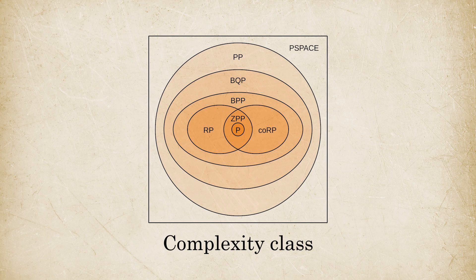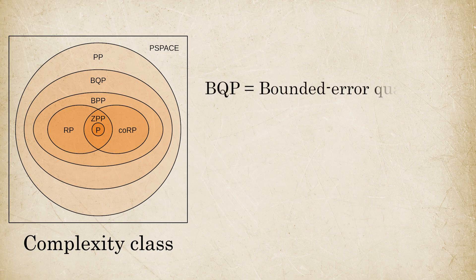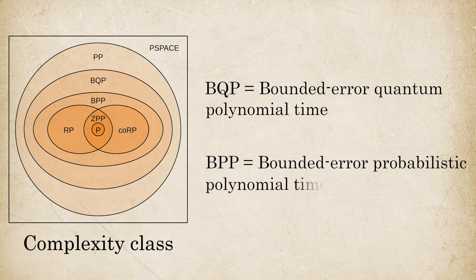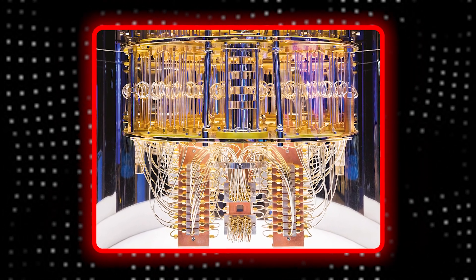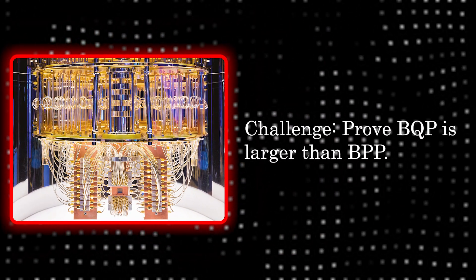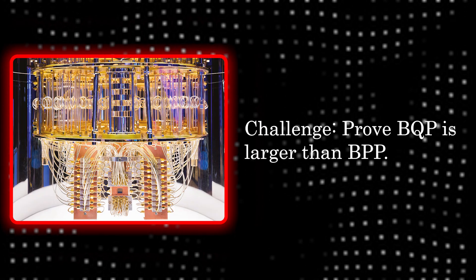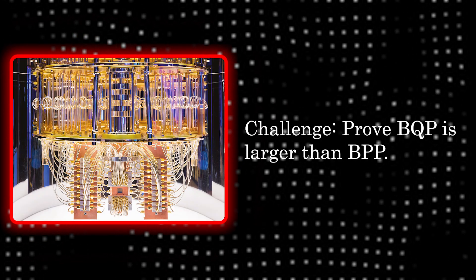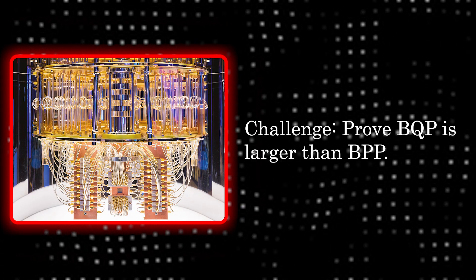We can formulate this problem like a computer scientist. Problems solvable by quantum computers efficiently are called BQP, with a classical counterpart called BPP. The grand challenge of quantum complexity theory is to prove that BQP is strictly larger than BPP — that quantum computers can truly do more than any classical one. But that's extremely difficult, because there might always exist a clever classical algorithm that we haven't discovered yet.